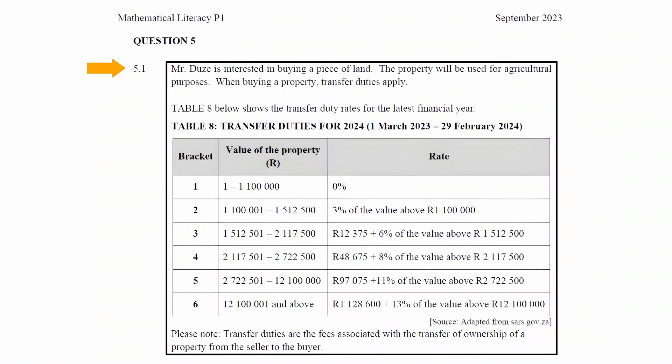Mr. Doozy is interested in buying a piece of land. The property will be used for agricultural purposes. When buying a property, transfer duties apply.